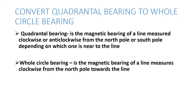We are going to start by defining the Quadrantal Bearing. It is a magnetic bearing of a line measured clockwise or anti-clockwise from the north pole or south pole, depending on which one is nearer to the line — either the north or the south that is closer to the line that you want to measure.